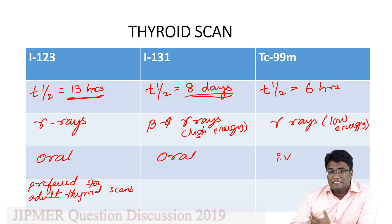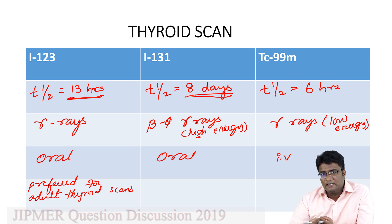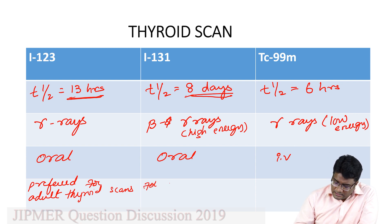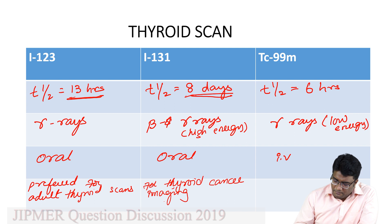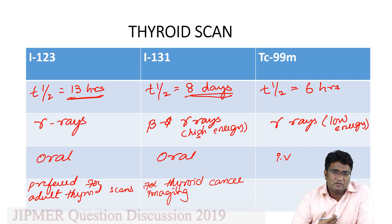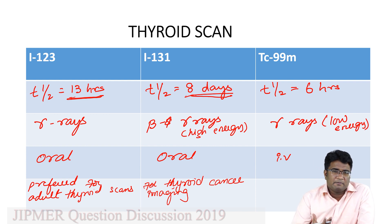Iodine 131 produces beta rays, which are effective in killing thyroid cancer cells. After being taken up into the thyroid gland, iodine 131 produces beta rays which kill the thyroid cancers. That is why iodine 131 is used for thyroid cancer imaging — especially because of its long half-life of 8 days. For post-therapy imaging, we give iodine 131 and after 48 hours we can image to see where the areas of metastasis are.